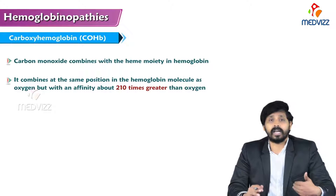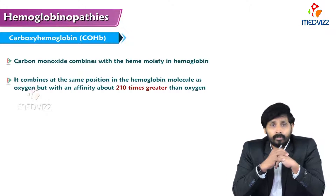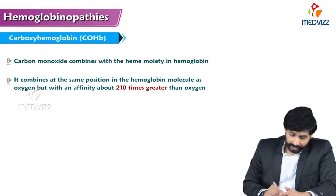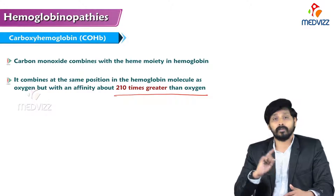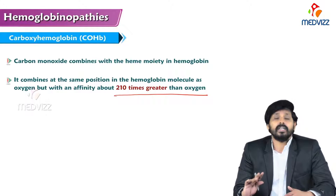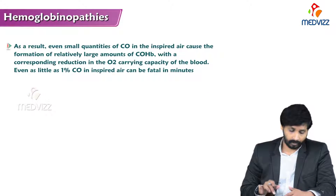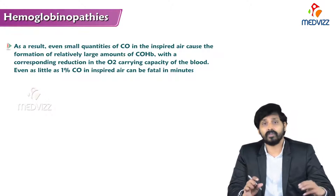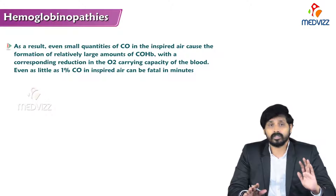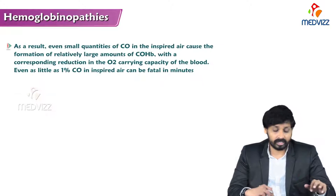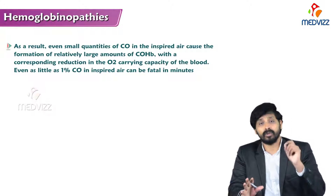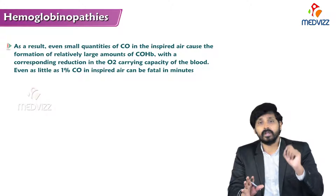Carboxyhemoglobin is formed when carbon monoxide combines with hemoglobin at the same position as oxygen, but with an affinity approximately 200 times greater than oxygen, making it very dangerous. Even small quantities of carbon monoxide in inspired air cause formation of relatively large amounts of carboxyhemoglobin, with a corresponding reduction in oxygen-carrying capacity of the blood. Even as little as one percent CO in inspired air can be fatal within minutes.